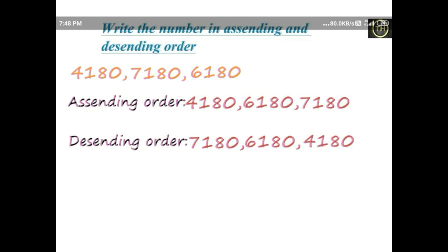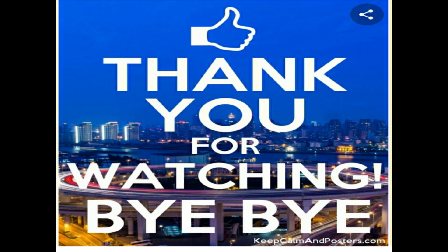Descending order means big number to small number — for example, 10, 9, 8, 7, 6, 5, 4, 3, 2, 1. Example numbers: four thousand one hundred and eighty, seven thousand one hundred and eighty, six thousand one hundred and eighty. Observing the numbers, the ones, tens and hundreds places are the same (one hundred and eighty). We compare the thousands digits: four thousand, six thousand, seven thousand. In ascending order: four thousand one hundred and eighty, six thousand one hundred and eighty, seven thousand one hundred and eighty. Thank you for watching the online class. Bye bye.